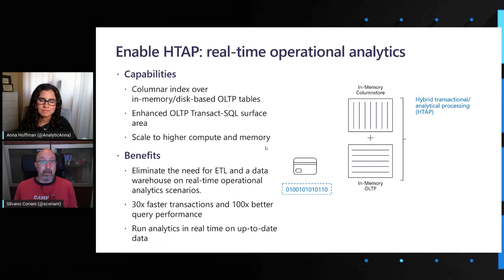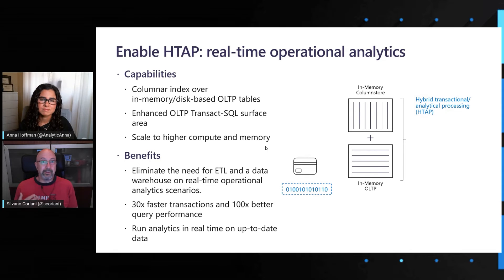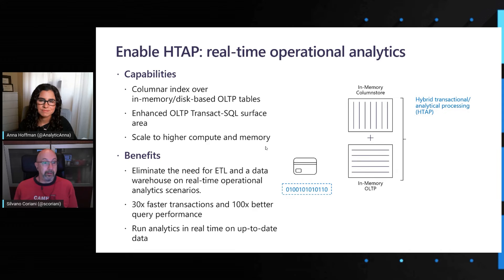So by bringing the two together, we can, for example, eliminate in some cases the need for running ETL processes on top of our OLTP data in order to denormalize them and create traditional data warehouses. In some cases, when we need this kind of fast real-time analytics, we can effectively speed up our performance by orders of magnitude. Actually, in-memory OLTP tables right now, we can run 30x faster. And for analytical queries, we have benchmark results where we can get 100x faster.